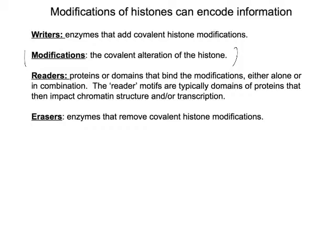There's information in these post-translational modifications of the histones. The things that put those modifications there we're going to call writers — things that add covalent modifications to histones. The things that come along and notice that they're there will bind to histones that have modifications and therefore will bind to nucleosomes that have modified histones — those we call readers. And then once we don't want that information there anymore, we need these modifications to be temporary, so we need things that can take those modifications away — those will be the erasers of the information. You need to understand the nomenclature: writers, readers, and erasers, and the importance of histone modifications, because those modifications are going to change the properties of chromatin locally.